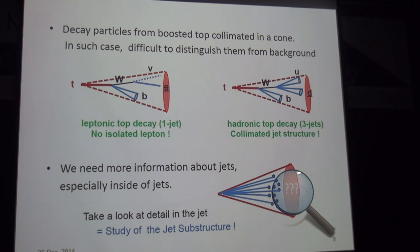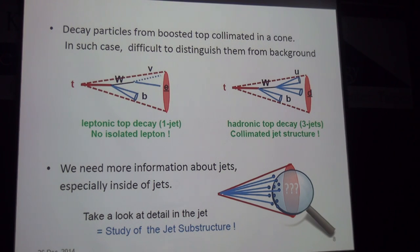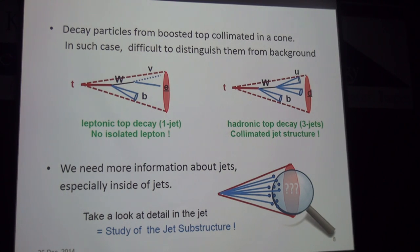In the more complicated case — namely hadronic top quark decay — there are three jets. If you consider the overlapping between these three jets, the analysis may be very difficult. So we need more information about the jets. Typically in such cases, we consider the inside of jets, so the study of jet substructure means taking a detailed look inside the jets, which represent the highly boosted top quark.